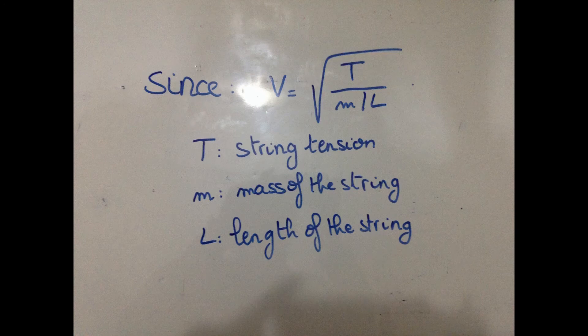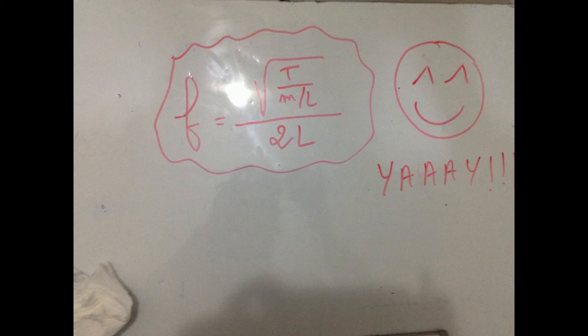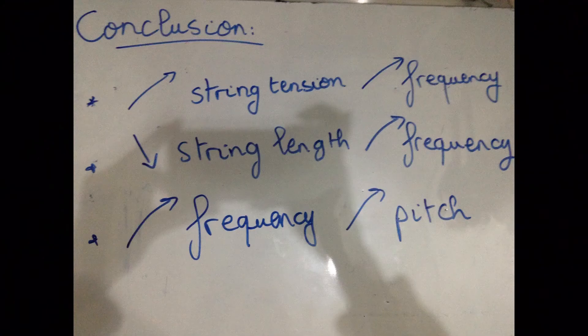Since velocity equals the square root of the string tension divided by the mass per unit length, the frequency can be put in the following form. All in all, the higher the string tension, the higher the frequency.